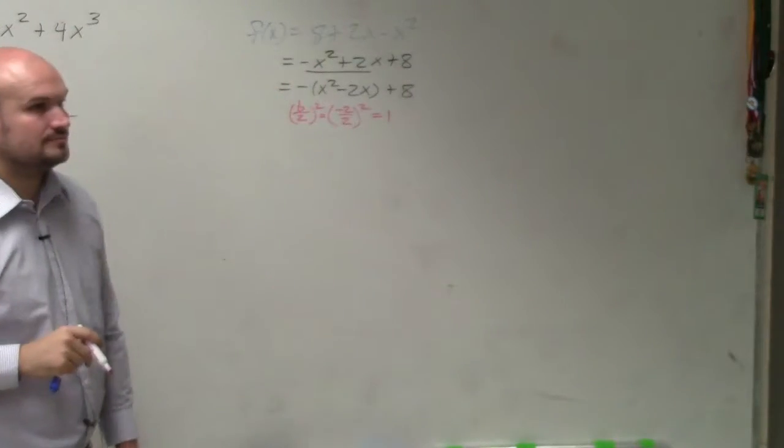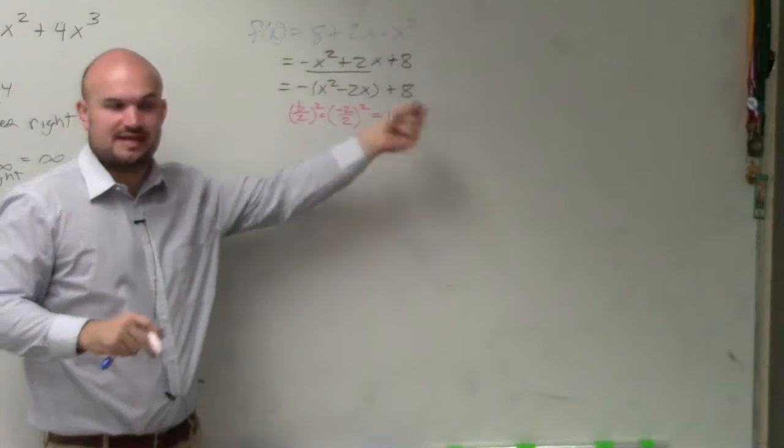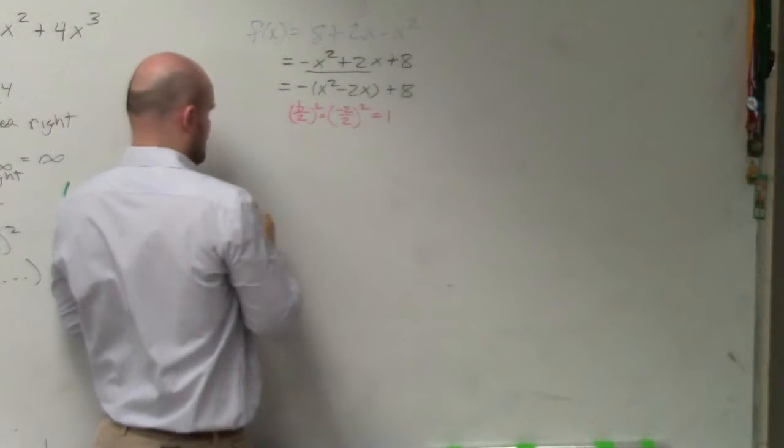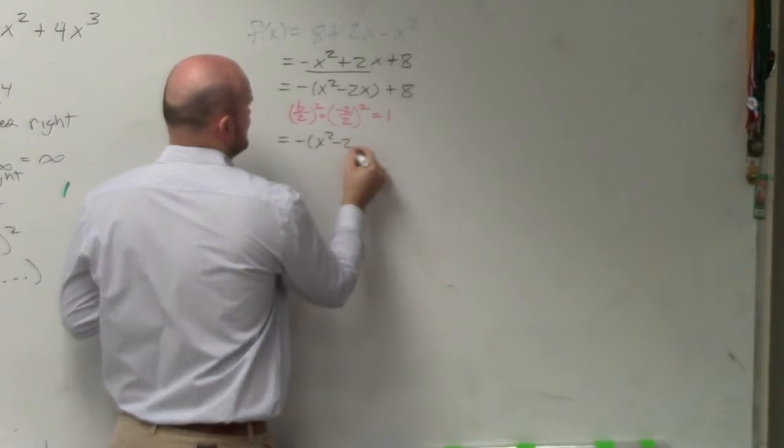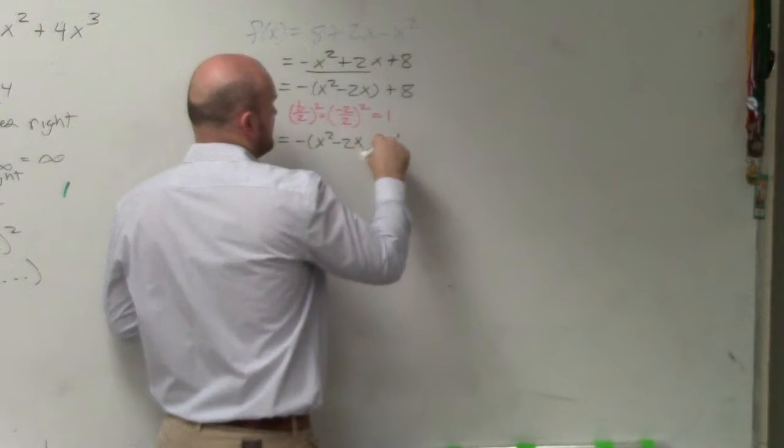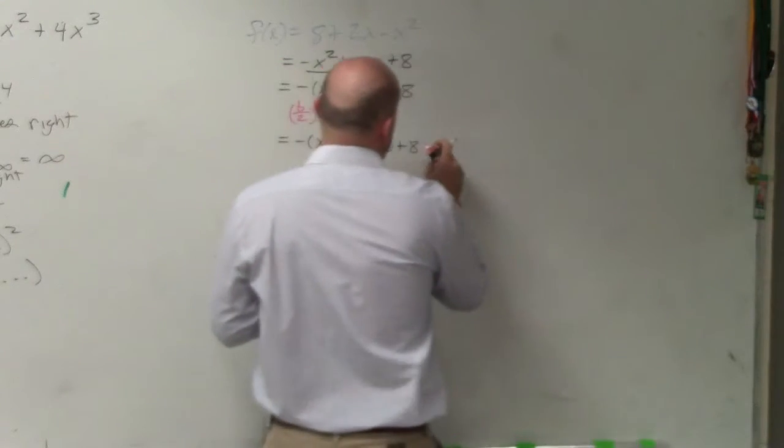Now, you could add that 1 to both sides, or you could add and subtract it to the same side, which I'm going to do. So now I have negative x squared minus 2x plus 1 plus 8 minus 1.